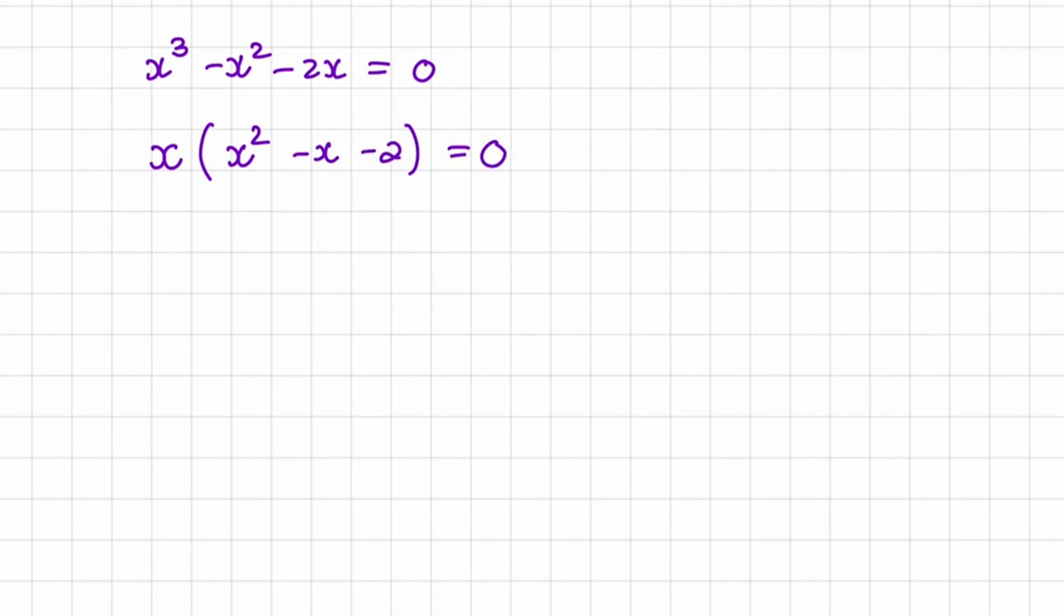Now the solution isn't that hard because we've taken out the x, we can see our trinomial inside of the bracket. So if we factorize the trinomial inside of the bracket, we'll have x and x, and the factors of 2 would be 2 and 1. We're trying to create negative x, so it'd be negative 2 plus 1. So x minus 2, x plus 1.